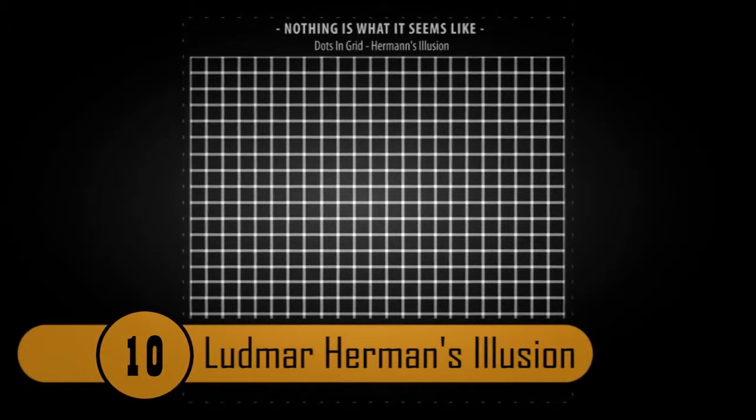Ludmar Hermann's Illusion. This is a classic illusion named after the man Ludmar Hermann. He discovered it in 1870. When you look at the object, it looks like there are gray dots at the points where the lines intersect. If you try to focus on one of those gray dots, they disappear. This is because they are not really there.